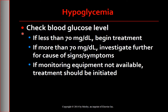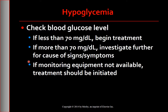Hypoglycemia can usually be quickly reversed with effective treatment. At the first sign of hypoglycemia, check the blood glucose level if possible. If it is less than 70 mg/dL, immediately begin treatment. If the blood glucose is greater than 70, investigate other possible causes. If monitoring equipment is not available or the patient has a history of chronic poor glycemic control, hypoglycemia should be assumed and treatment initiated.